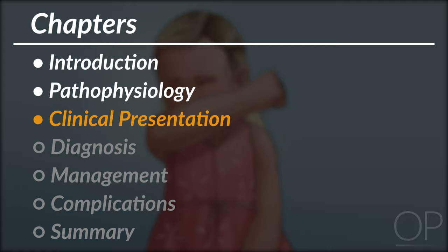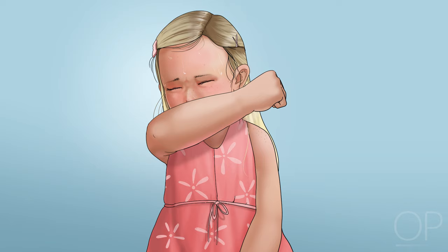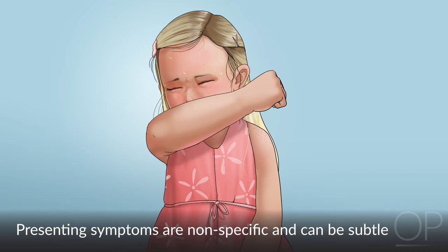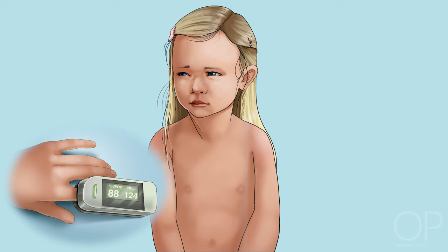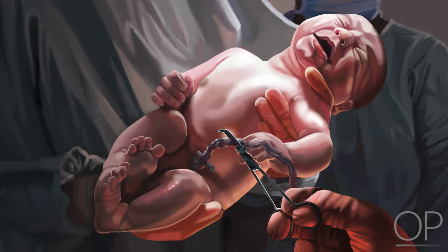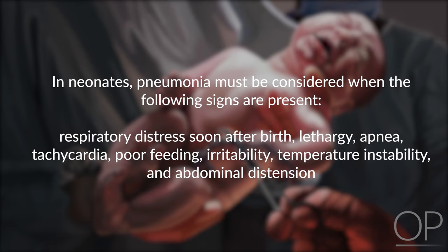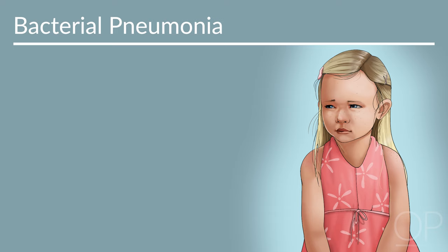Clinical Presentation. The most common presentation of pneumonia is fever and cough. However, the challenge in clinically identifying pneumonia lies in the fact that presenting symptoms are nonspecific and can be subtle, especially in young children. Tachypnea is a particularly important finding and is the most sensitive and specific sign of pneumonia in infants. Other symptoms include hypoxemia, abdominal pain, and increased work of breathing, which can manifest as nasal flaring, accessory muscle use such as retractions, or grunting. In neonates, pneumonia must be considered when respiratory distress, lethargy, apnea, tachycardia, poor feeding, irritability, temperature instability, or abdominal distension are present.